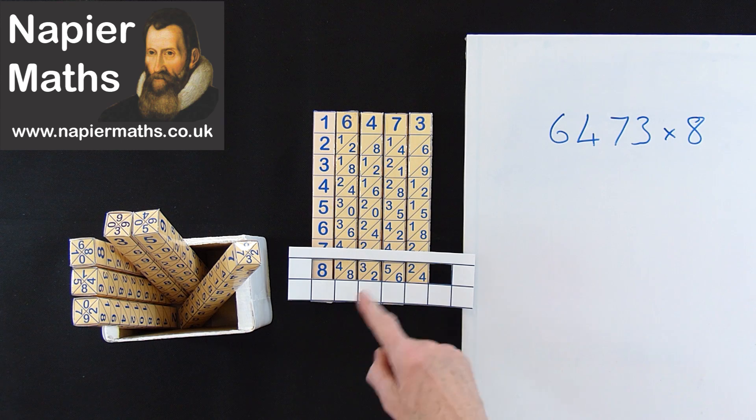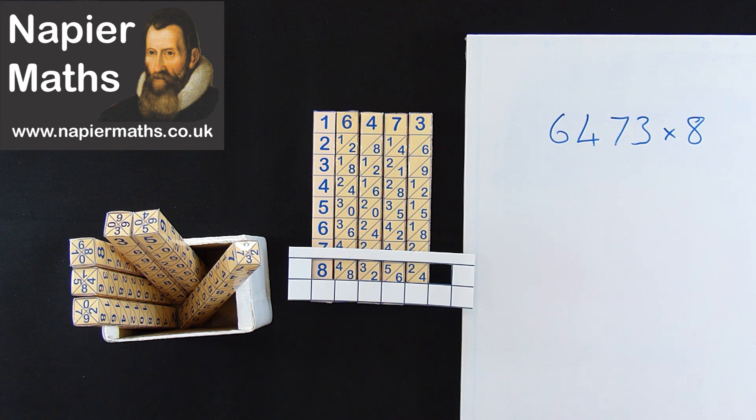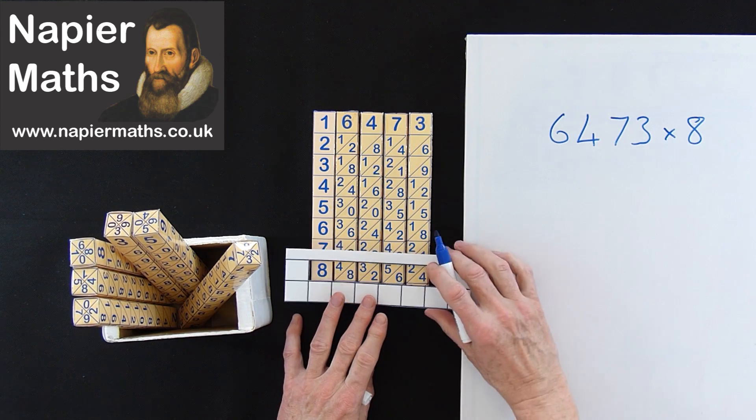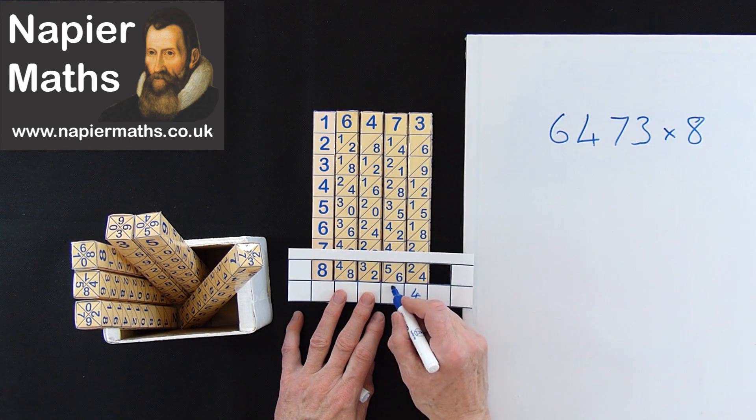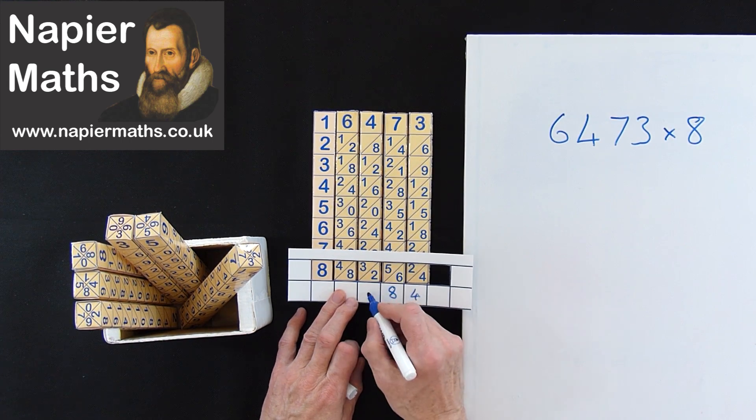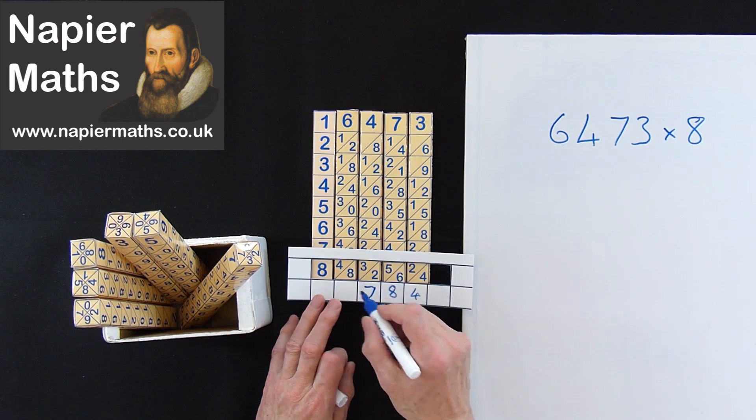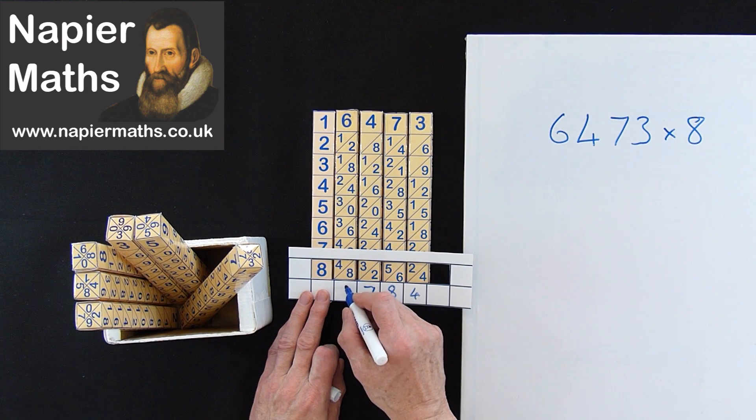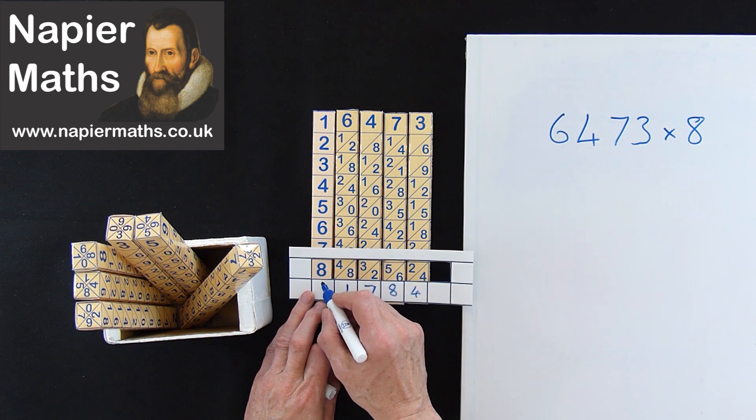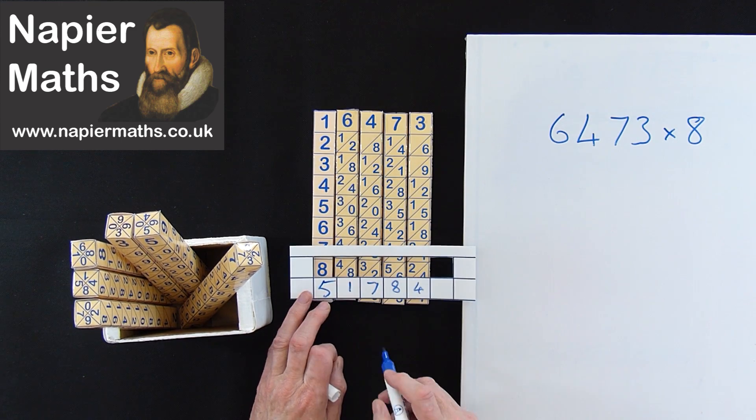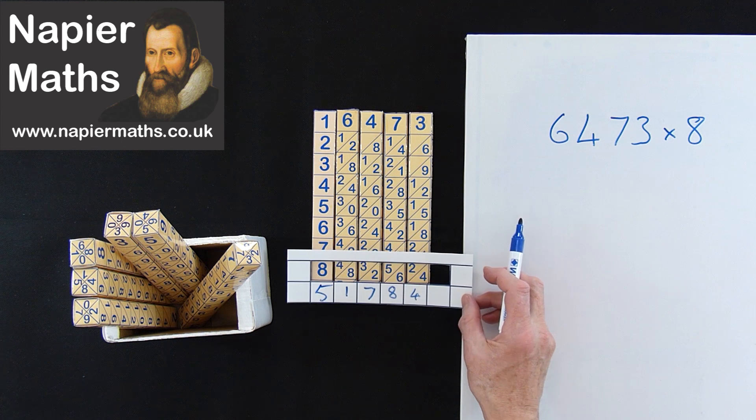And then we move down the diagonals and we get our answer. So there's only 1 in the first bit there, so we get 4. 2 plus 6 gives you 8. 5 plus 2 gives you 7. 8 and 3 gives you 11, so that's 1, carry 1 and we get 5. So we get 51,784.